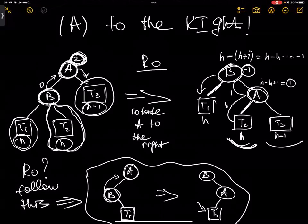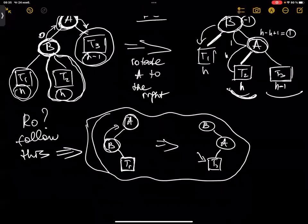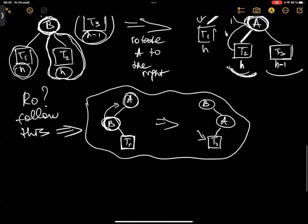We have successfully considered the R0 case: when deleting from the right subtree and the balancing factor of the root of the left subtree B is zero, you rotate A to the right. A becomes the root of the right subtree, B becomes the new head, and you move T2 (B's right subtree) to become A's left subtree. It's pretty straightforward.